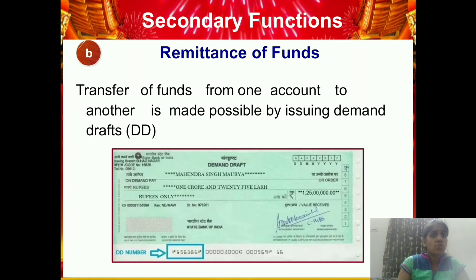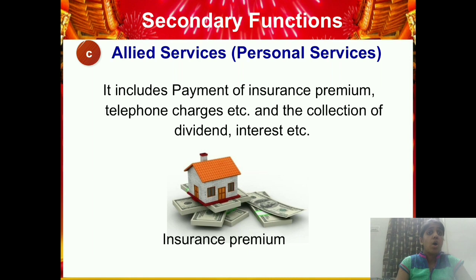The second secondary function is remittance of funds — transferring funds from one account to another through demand drafts or other forms. The last secondary function is allied services — personal services including paying your insurance premium, telephone charges, collecting interest or dividend, paying rent or electricity bills, and locker facility where you can keep your belongings. These are the three secondary functions of the bank.